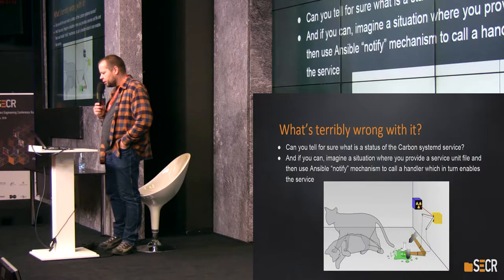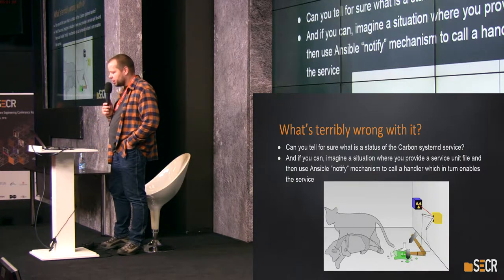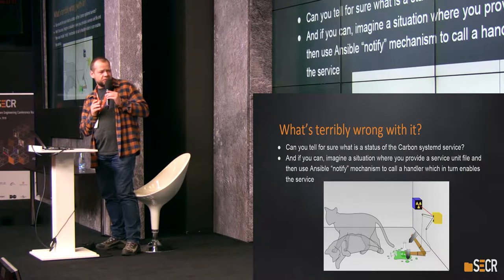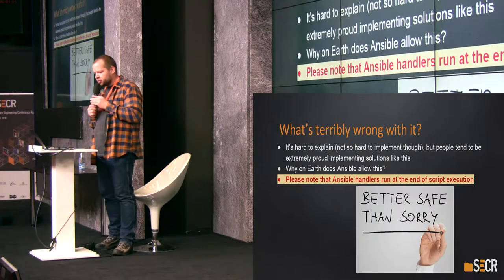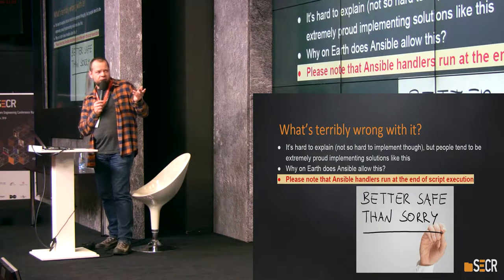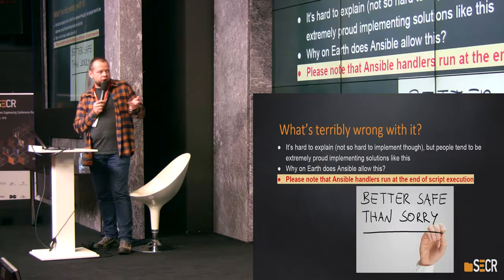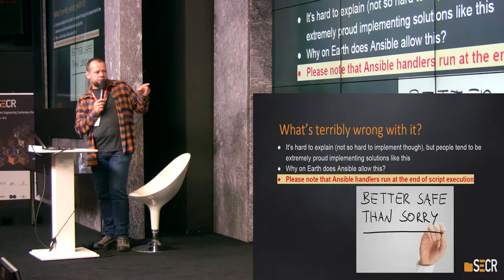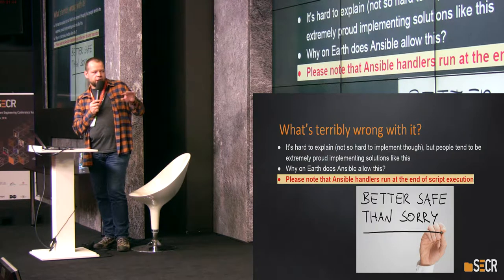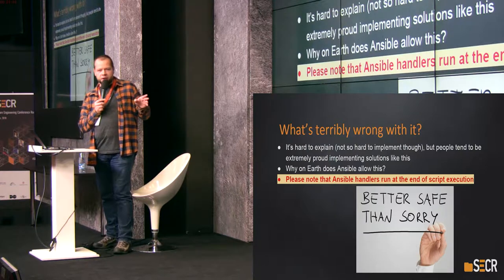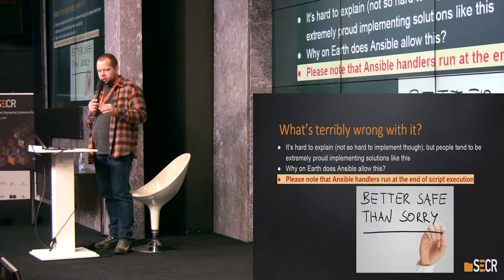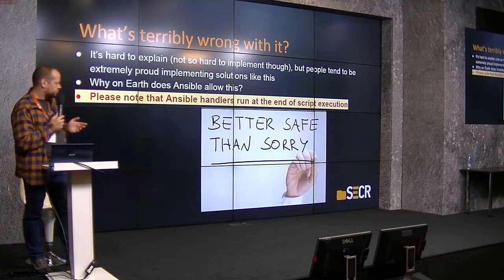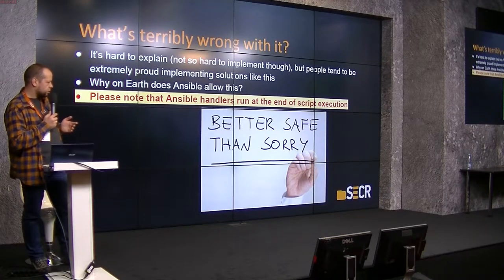Imagine a situation where you provide a service unit file and then use a notification mechanism to call an Ansible handler which enables the service. If your playbook run fails, there are no handlers run at the end. And if you run it a second time, your config is in place, it's not overwritten, and the handlers are not run — your service is not even started. So it's kind of a Schrödinger's thing: your configuration is not applied in full.